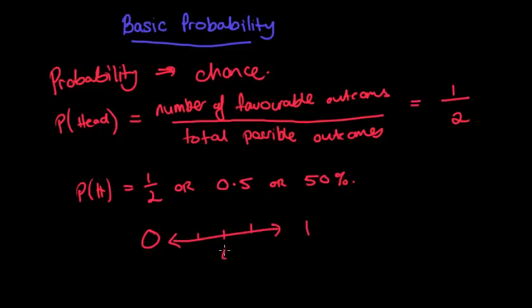Sometimes we use words like an even chance, unlikely, likely, impossible, or definite or certain. So lots of different words that we can use in order to describe our probability.